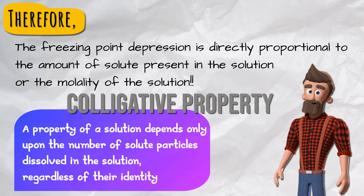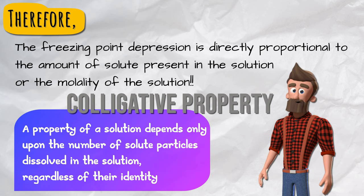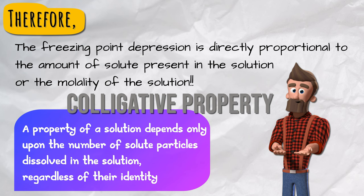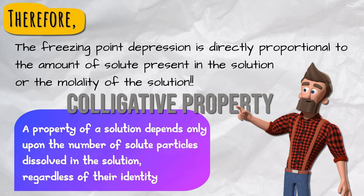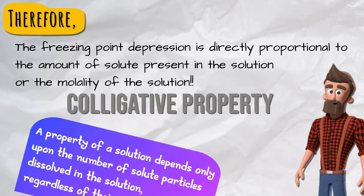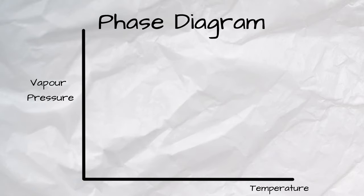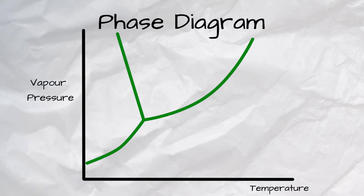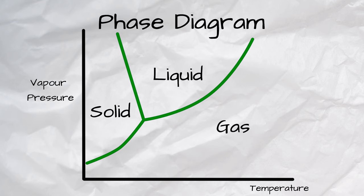As you can see, the freezing point of a solution is always less than the freezing point of the pure solvent. The freezing point depression can also be explained in terms of the vapor pressure. Adding solute to a solvent will essentially dilute the solvent concentration, and this leads to a decrease in the vapor pressure.